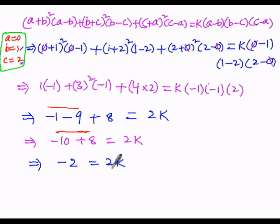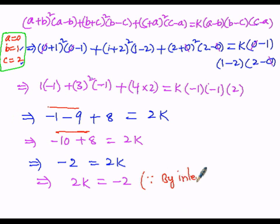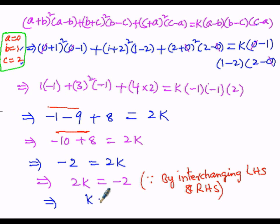By interchanging the left-hand side and right-hand side, we get 2k = −2. Dividing both sides by 2: k = −2 / 2 = −1. Therefore k = −1.